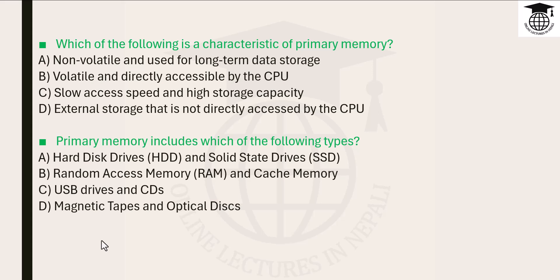Multiple choice question: Which of the following is a characteristic of primary memory? A) Non-volatile and used for long-term data storage. B) Volatile and directly accessible by CPU. C) Slow access speed and high storage capacity. D) External storage that is not directly accessed by CPU.